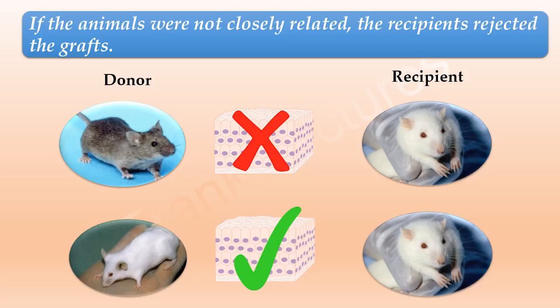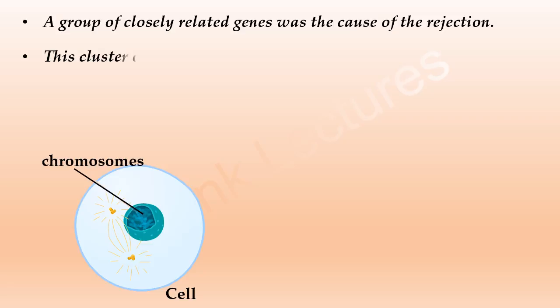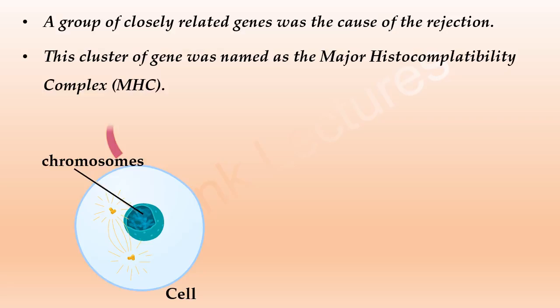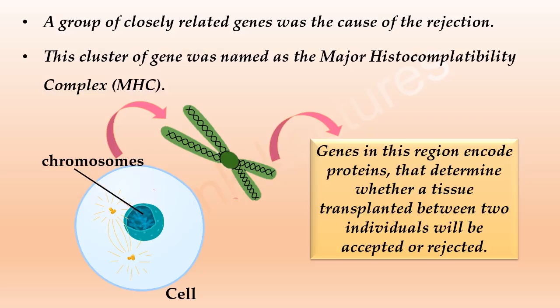Further research revealed that a group of closely related genes was the cause of the rejection. They named this cluster of genes the major histocompatibility complex, abbreviated as MHC. The major histocompatibility complex got its name from the fact that the genes in this region encode proteins which determine whether a tissue transplanted between two individuals will be accepted or rejected.